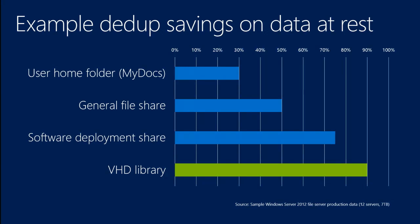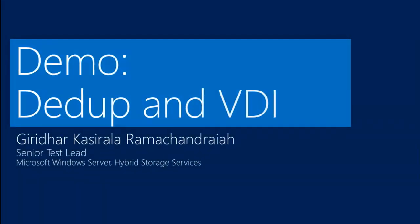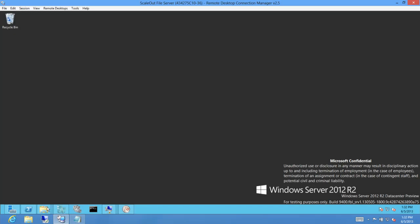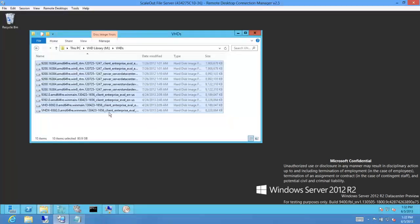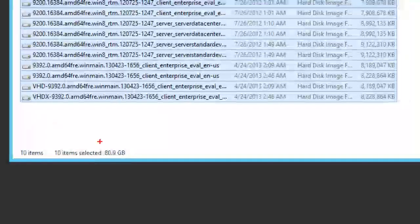I'm going to turn it over to Geary, who is the senior test lead for deduplication. He's going to show us what that looks like. So let me show you an example of the kind of savings we see in the case of VHD libraries. I have here a VHD library onto which various OS VHD images are stored. If you see the total size of these files, it's around 80 GB — this is the logical file size.